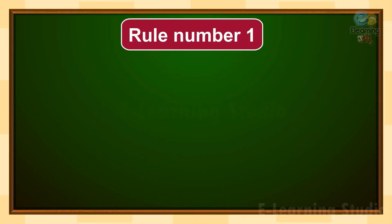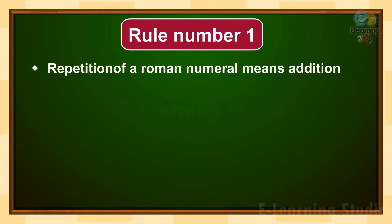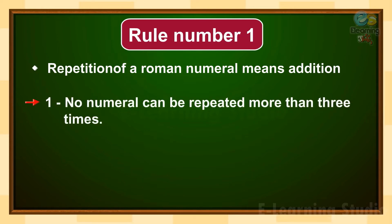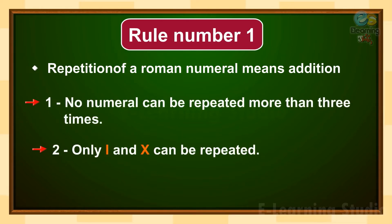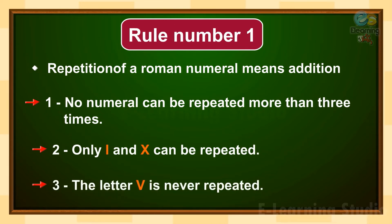Rule number one: repetition of a Roman numeral means addition. Children, no numeral can be repeated more than three times. Only I and X can be repeated, but the letter V is never repeated.